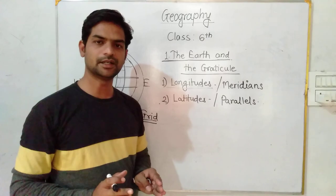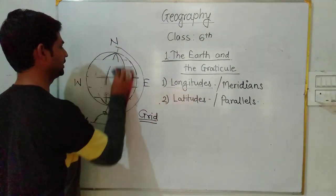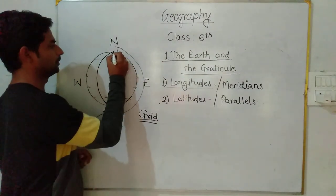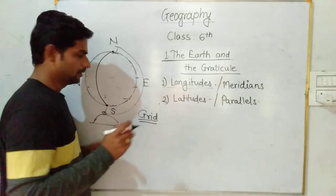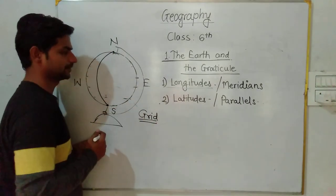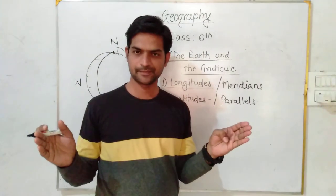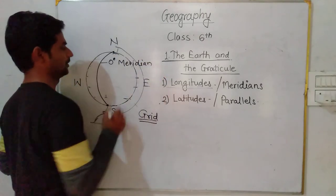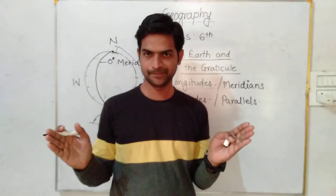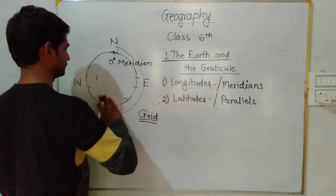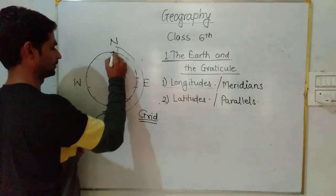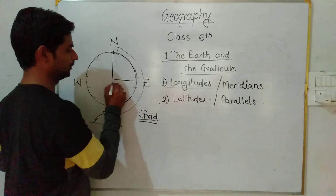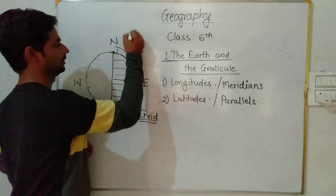First of all we will discuss about the longitudes. You can see here there are some imaginary lines which are running from North to South. This is the North Pole and this is the South Pole. Due to these longitudes, our Earth is also divided into two hemispheres. Just like this zero degree meridian divides our Earth into two equal halves. Due to this meridian, this Earth is divided into two halves. This half portion of the Earth is called a hemisphere.